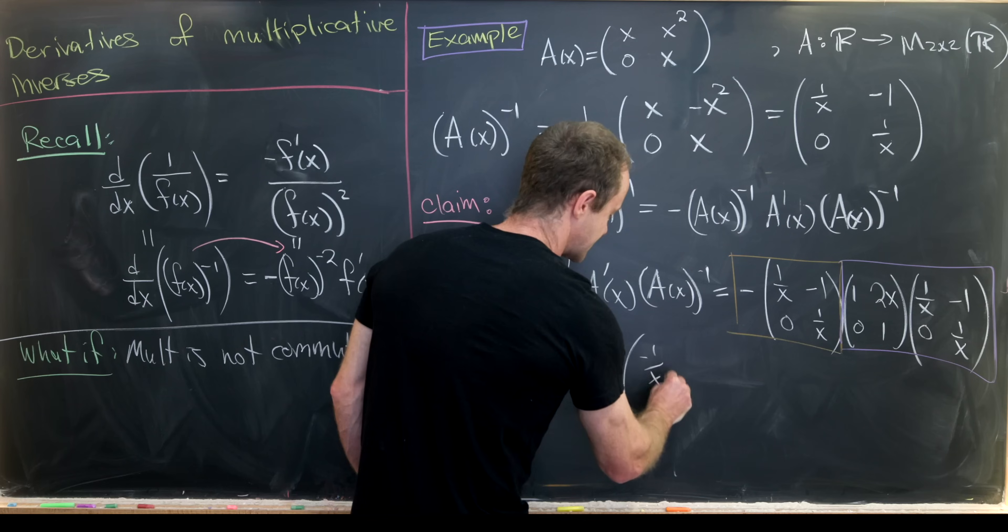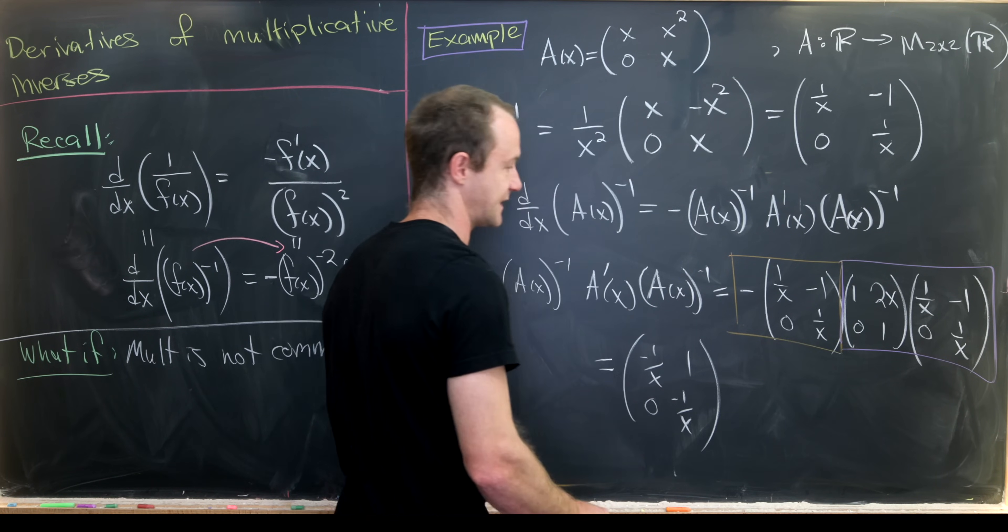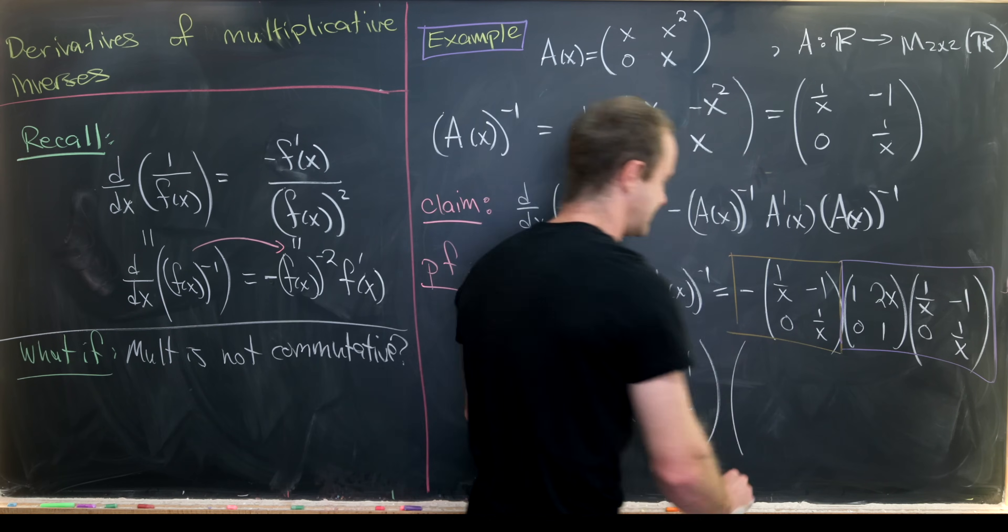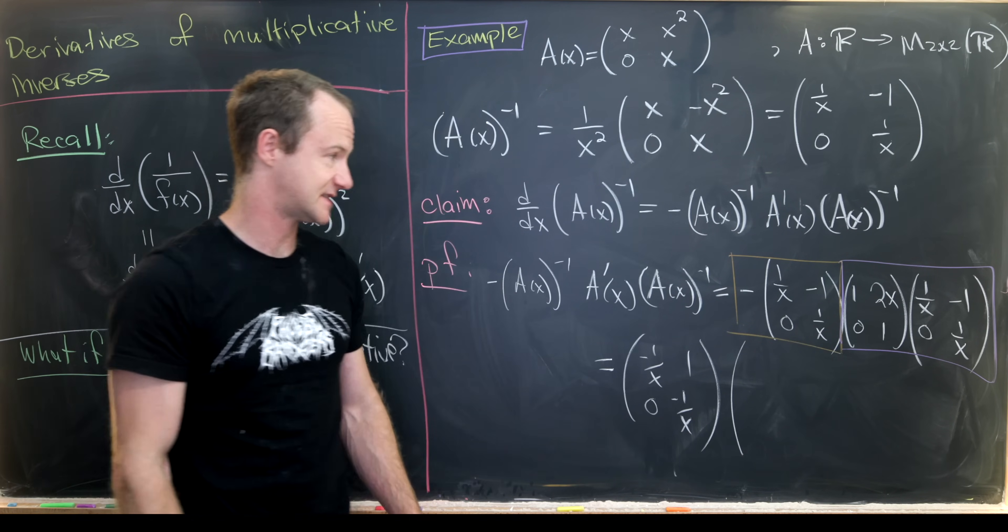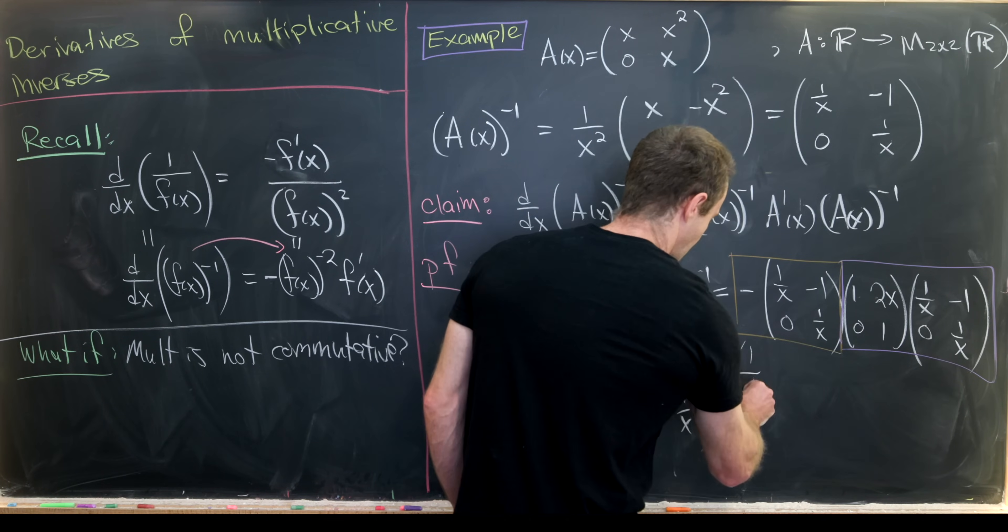This is going to give me minus 1/x, 1, 0, and minus 1/x for that first product. And then I have to do matrix multiplication for this second bit.